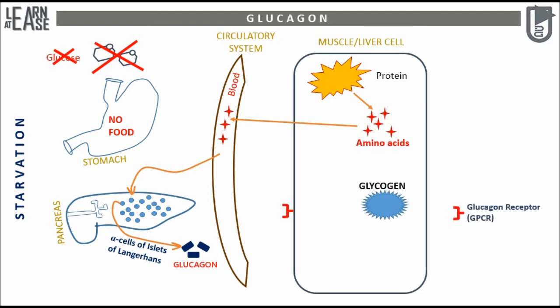The receptors of glucagon are located on liver and muscle cells, and they belong to the family of GPCR. I have already prepared a video on GPCR — you will find its link in the description. Glucagon binds to GPCR and activates it to produce cyclic AMP, which is the second messenger. Cyclic AMP will then induce a cascade of reactions to catabolize glycogen and produce energy under starving conditions.